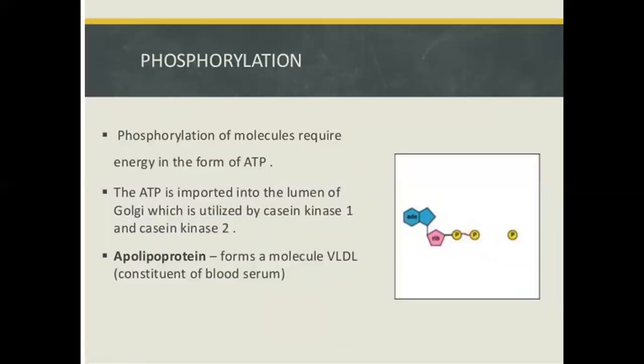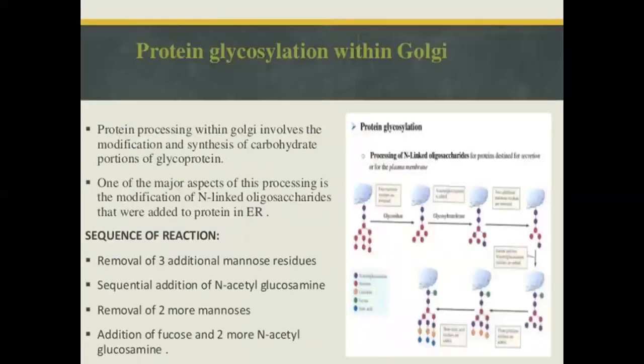Phosphorylation of molecules requires energy in the form of ATP. The ATP is imported into the lumen of the Golgi, which is utilized by casein kinase 1 and casein kinase 2. Protein glycosylation within the Golgi involves modification and synthesis of carbohydrate proteins of glycoproteins. A major aspect of this processing is the modification of N-linked oligosaccharides added in the ER — involving removal of three additional mannose residues, sequential addition of N-acetylglucosamine, removal of two more mannose, and addition of fucose and more N-acetylglucosamine.